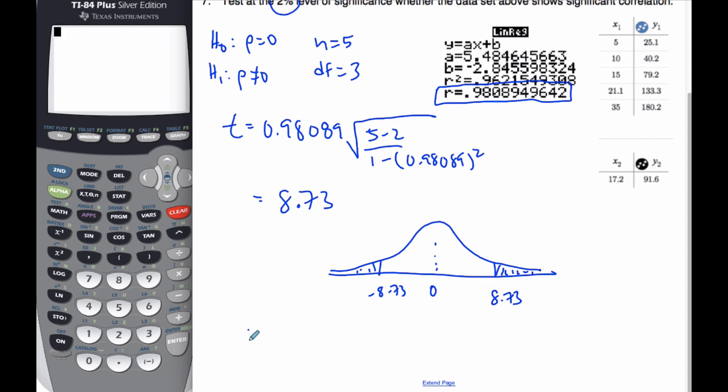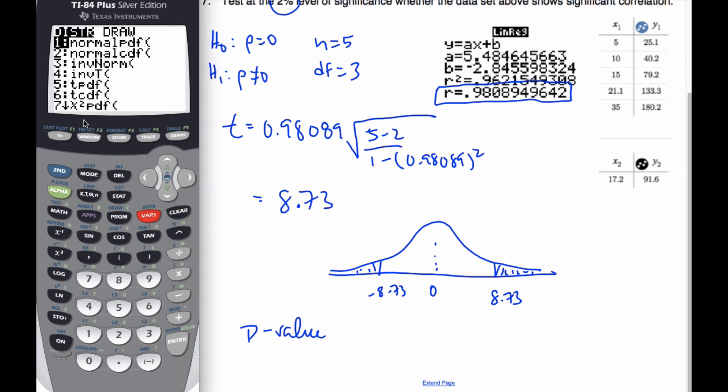So I'm going to find my p-value. Going to my calculator, I'm going to go to distributions, TCDF. Since I've already done it, my lower value, I'm going to find this area is 8.73 to a big value. My degrees of freedom is 3, and I paste it in.